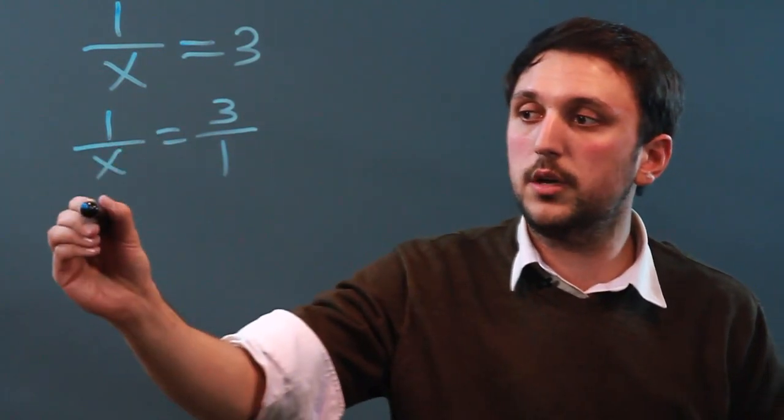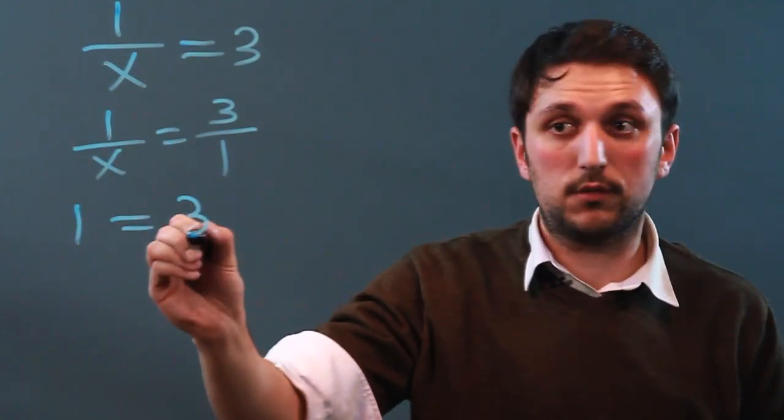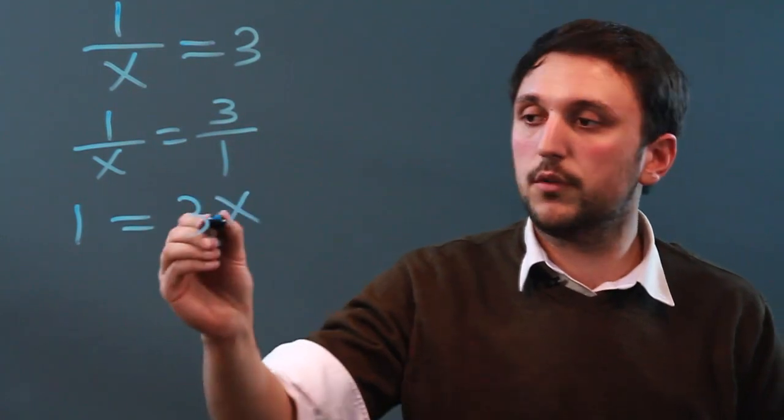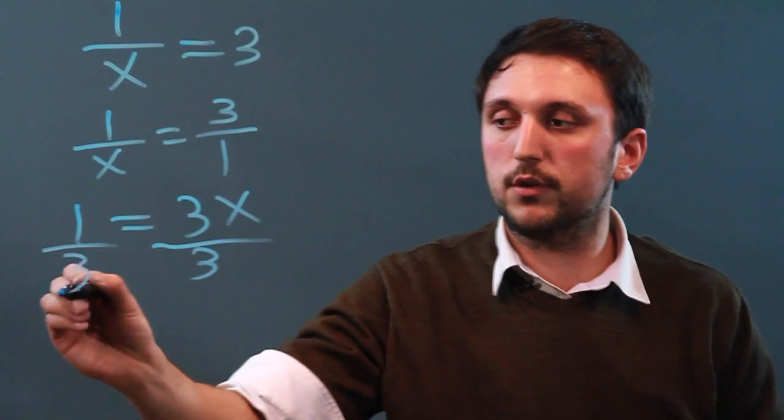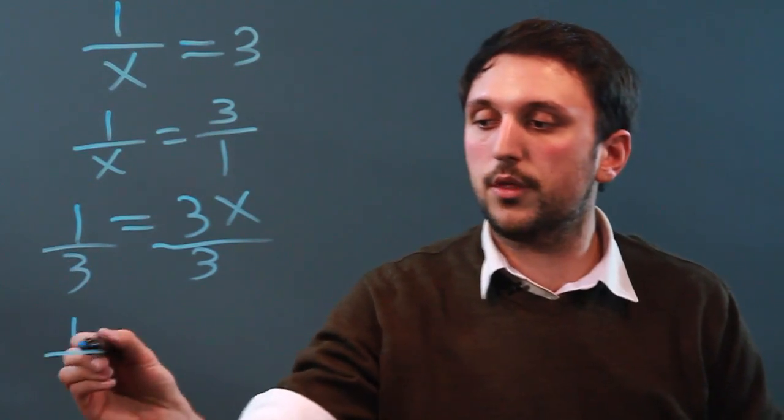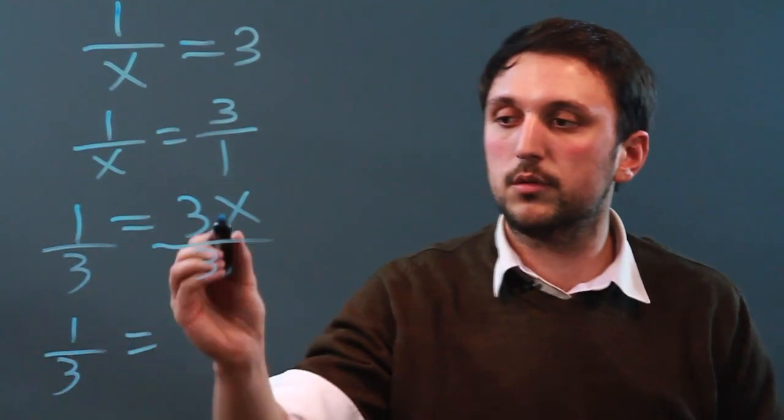So, 1 times 1 is 1, and 3 times x is 3x. So, we divide each side by 3 to get rid of the coefficient, so we get 1 third equals x.